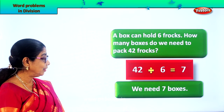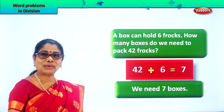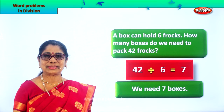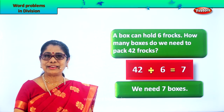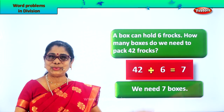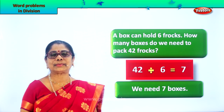Very good. We need 7 boxes — 1 box holds 6 frocks, 7 boxes hold 42 frocks. Did you enjoy? Let's look at another word problem in division.